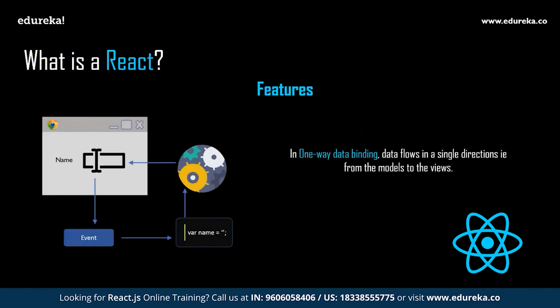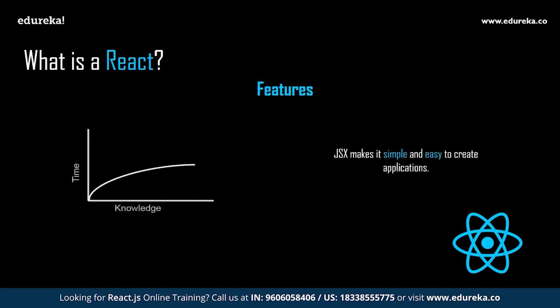One-way data binding. Unlike other frameworks, React follows unidirectional data flow. The major advantage of one-way data binding is that throughout the application the data flows in a single direction, giving you better control over it. The application state is contained in specific stores and as a result the rest of the components remain loosely coupled, making the application more flexible and leading to increased efficiency. Simplicity: the use of JSX files makes the application really simple and easy to code and understand. React's component-based approach along with distinct lifecycle methods also makes it simple to learn.